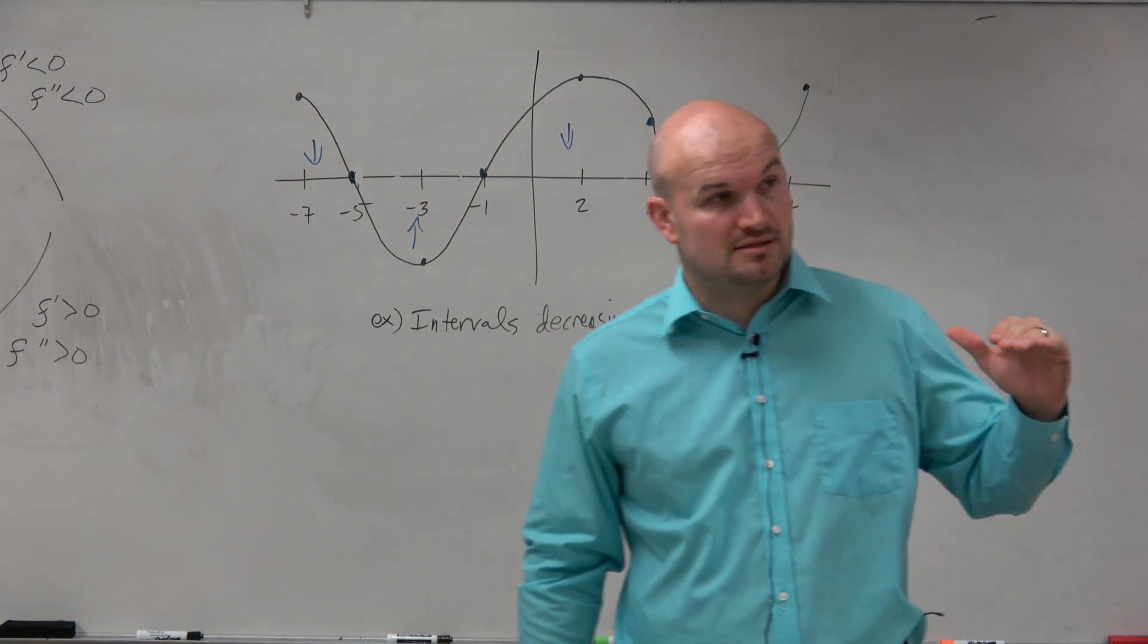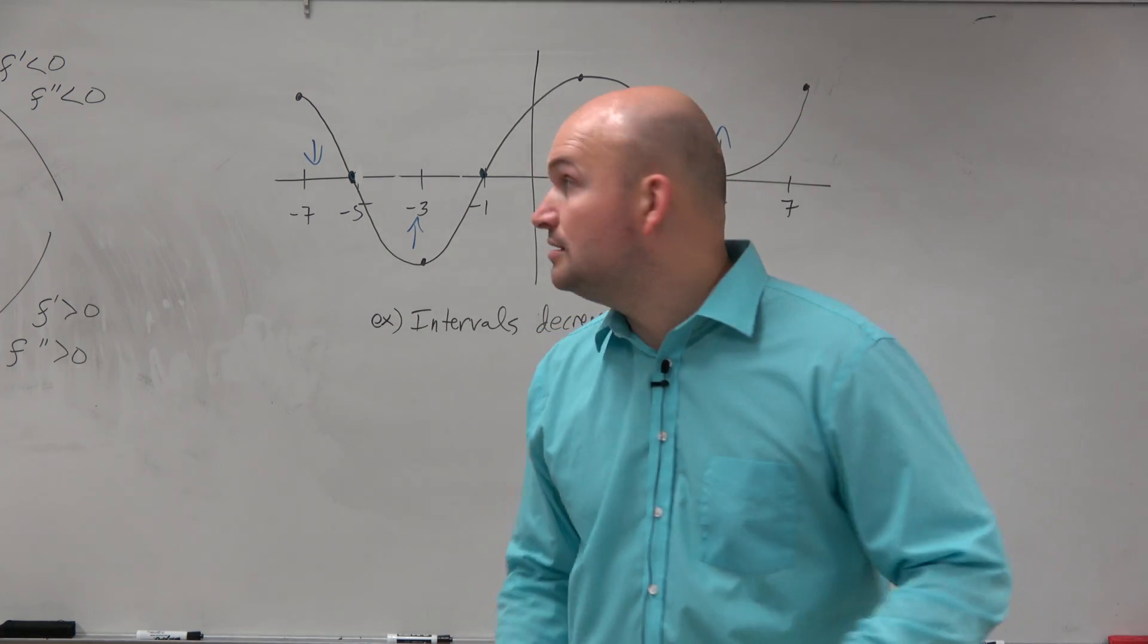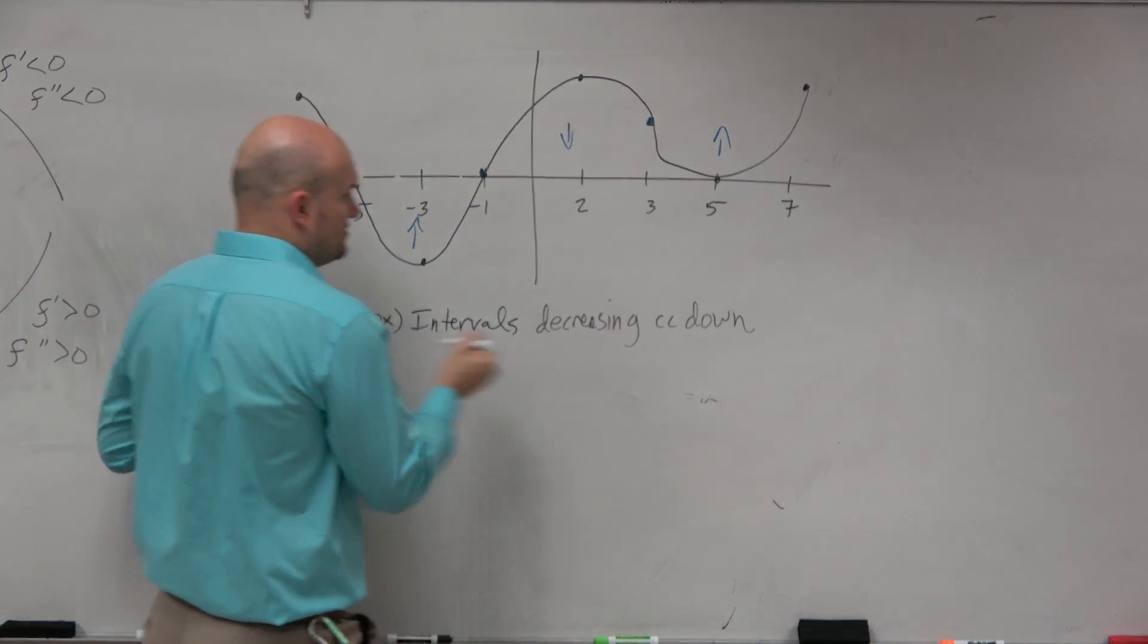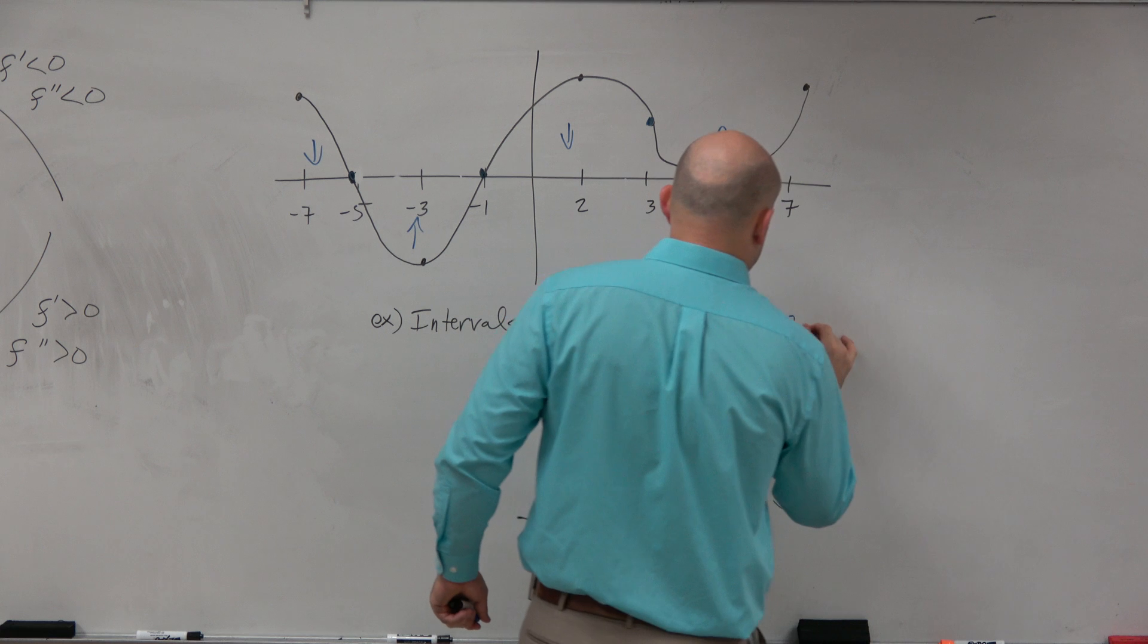So that means the slope is negative, right? So if we look at that, we can see that, well, here, negative 7 to 5, that's decreasing. So we could say from negative 7 to 5.